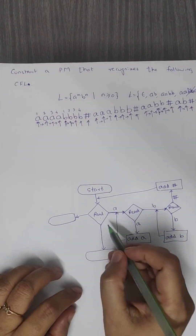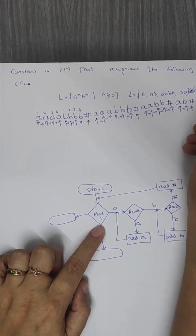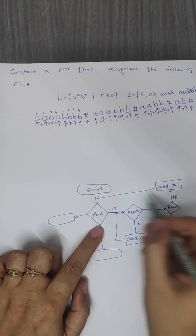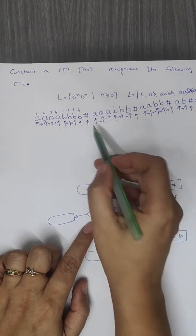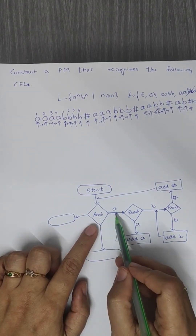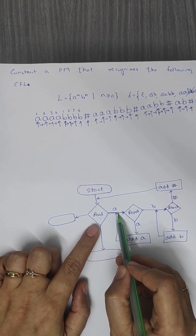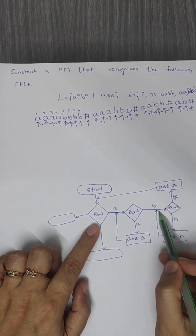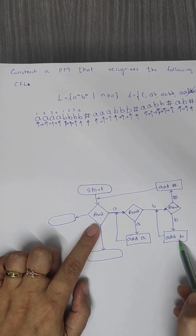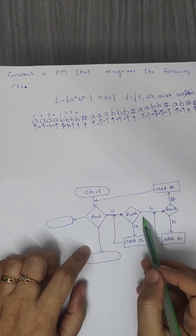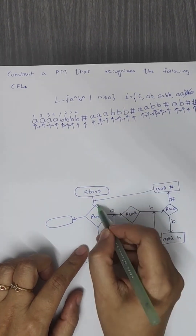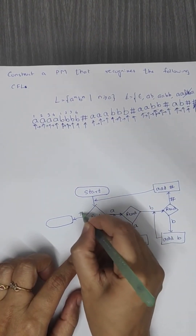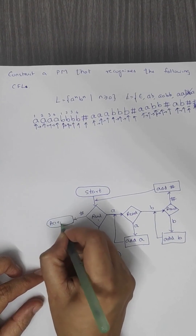After adding hash, we iteratively perform the same operation again: read first a, skip it, add remaining a's to the queue, read first b, skip it, add remaining b's to the queue. After adding hash, if in the next read we receive one more hash, that means we accept the string.